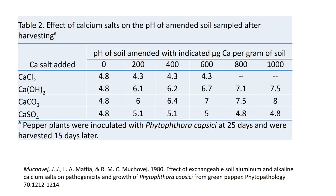Looking at the effects of calcium salts on the pH of amended soil after harvesting: pepper plants were inoculated with Phytophthora capsici at 25 days and harvested 15 days later. Soil was amended with various levels of calcium per gram, using four different calcium materials — calcium chloride, calcium hydroxide, calcium carbonate, and calcium sulfate. We were looking for an effect between calcium and disease, and we didn't get it. Going back to look at it, we found that calcium chloride didn't cause a pH change, calcium sulfate didn't either, but calcium hydroxide and calcium carbonate produced a rather substantial pH change. Our treatment affected something more than just the calcium content of the plant — it affected the pH of the soil.